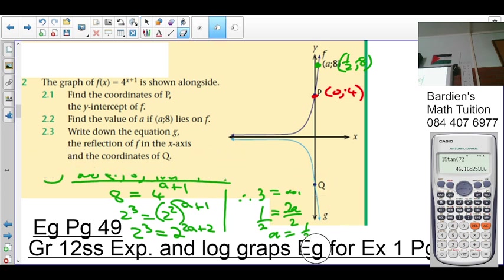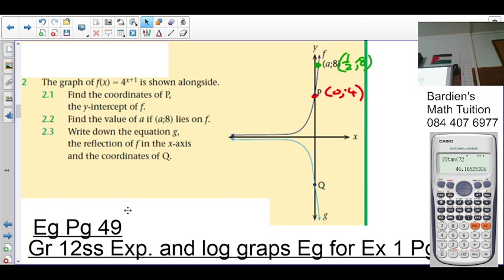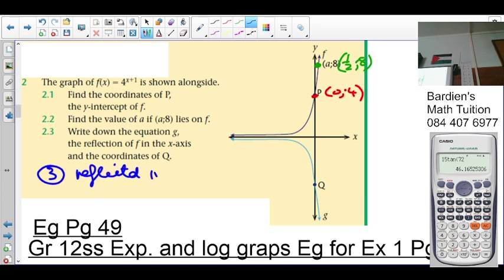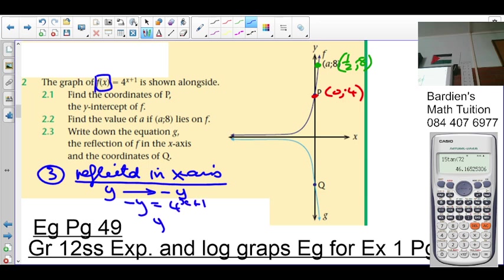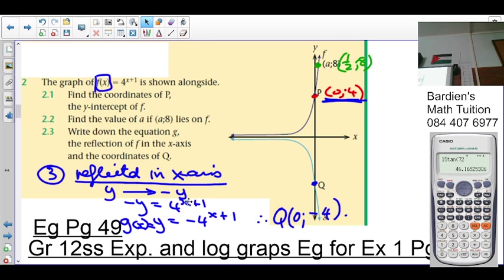Number 3.3, write down the equation of G, the reflection of F in the x-axis. We said if something is reflected in x-axis, what's the rule? The y becomes negative. So F of x, that is a y, so it's negative y equals 4 to the x plus 1. So y equals negative 4 raised to x plus 1. That's the equation of G of x. And the coordinates of Q? The coordinates of Q is an image of P. The rule for reflecting in the x-axis is the y becomes negative, so Q is definitely 0 and negative 4.